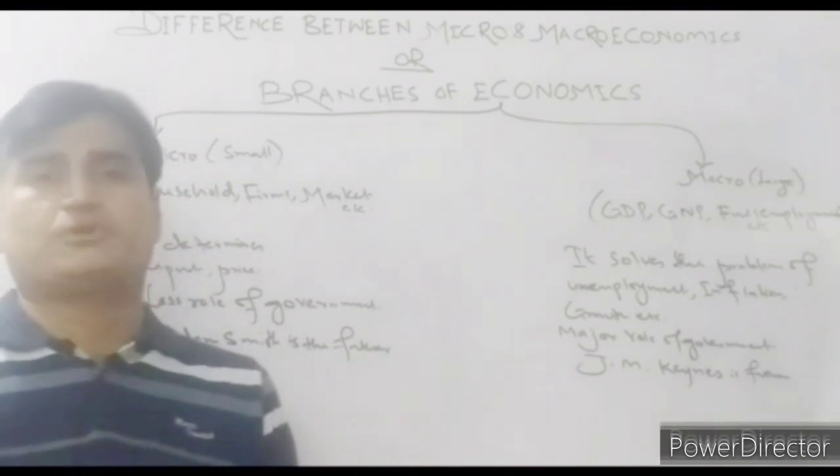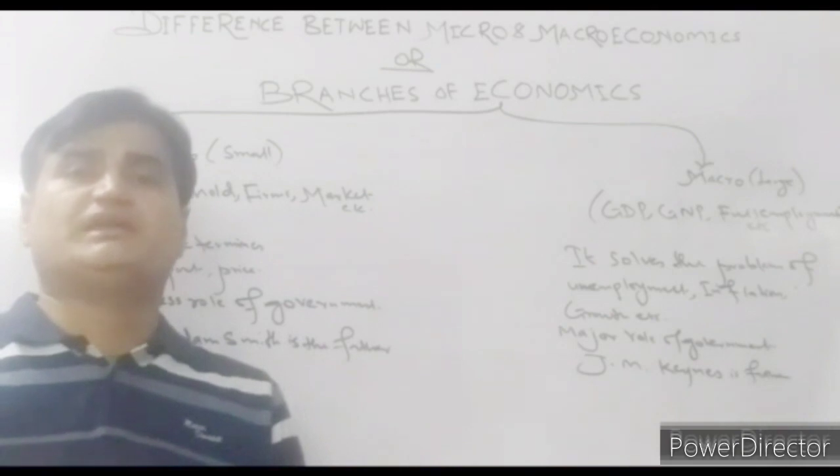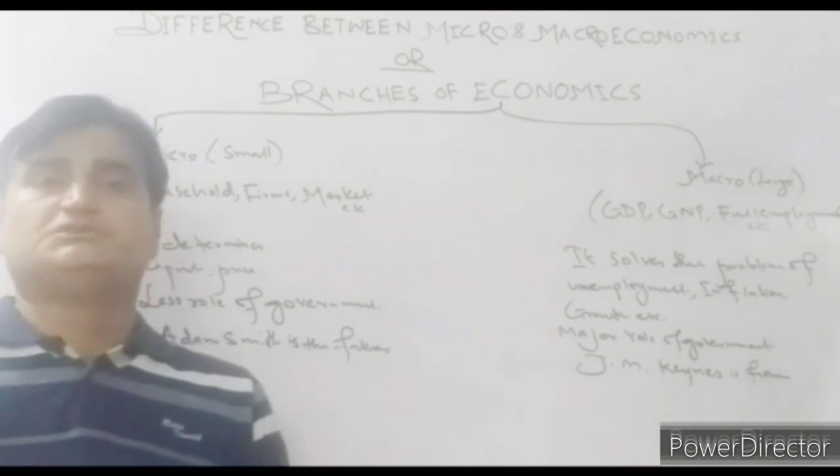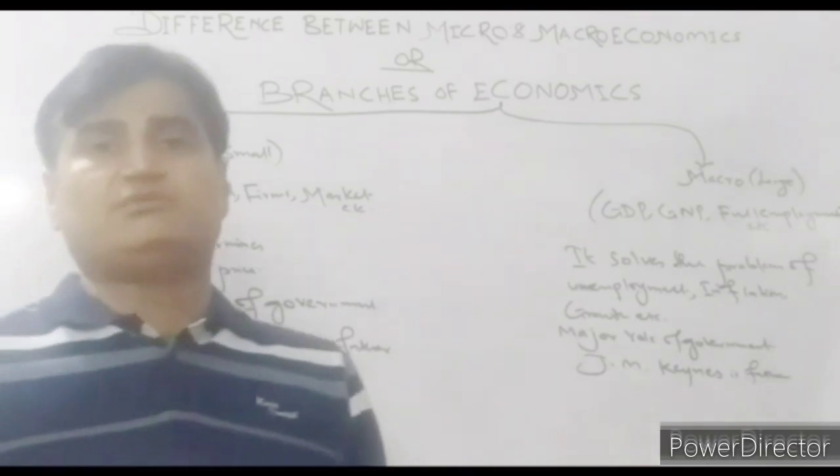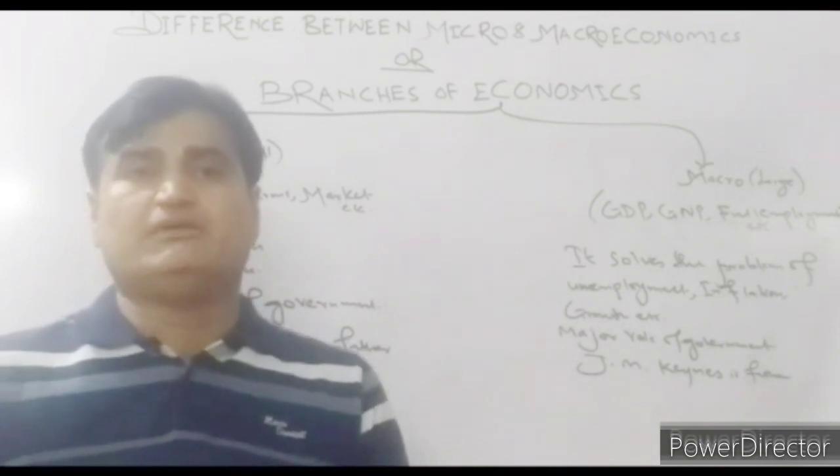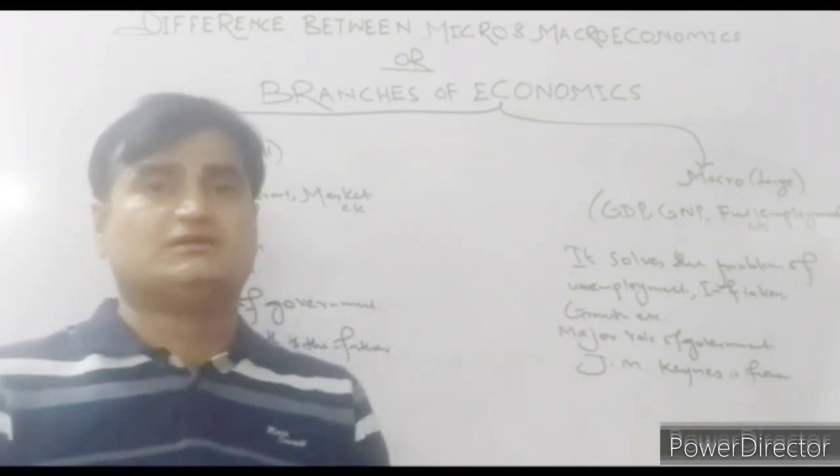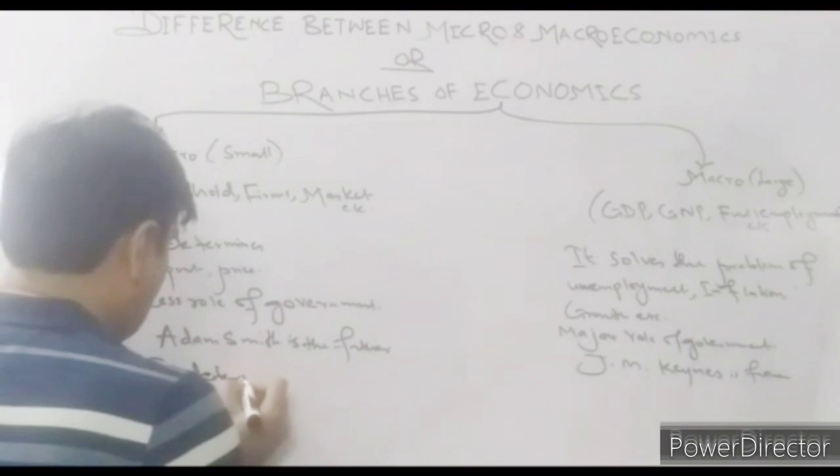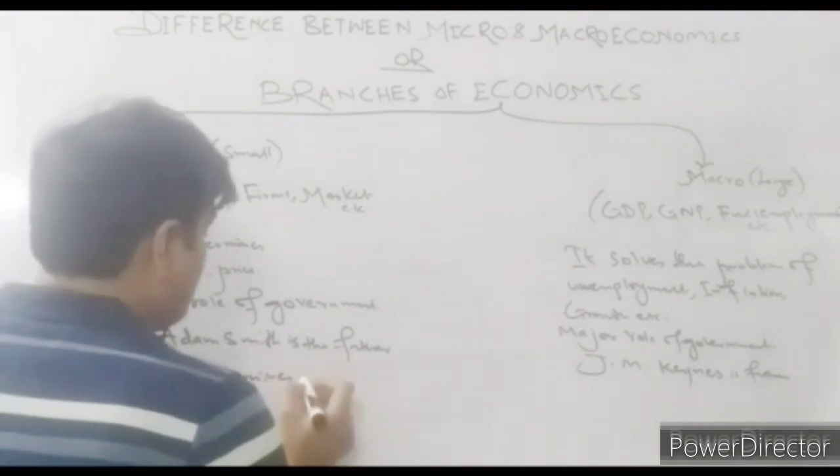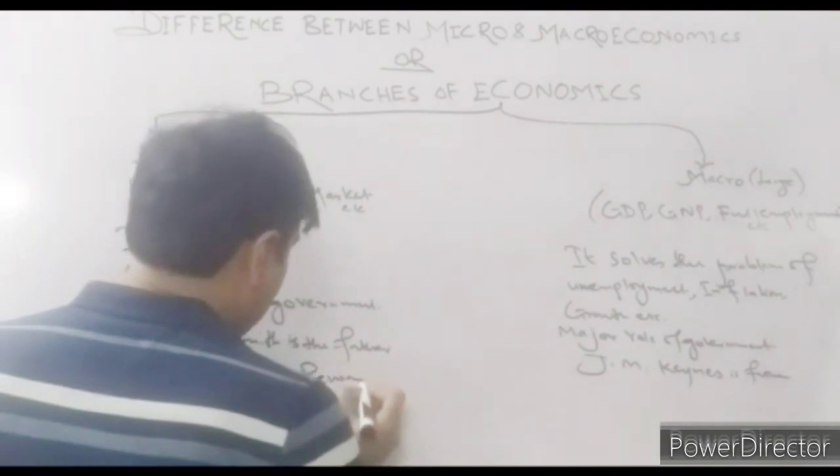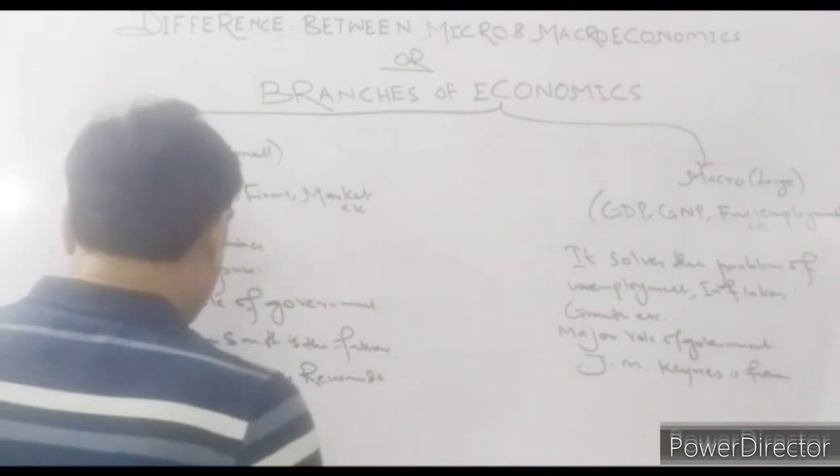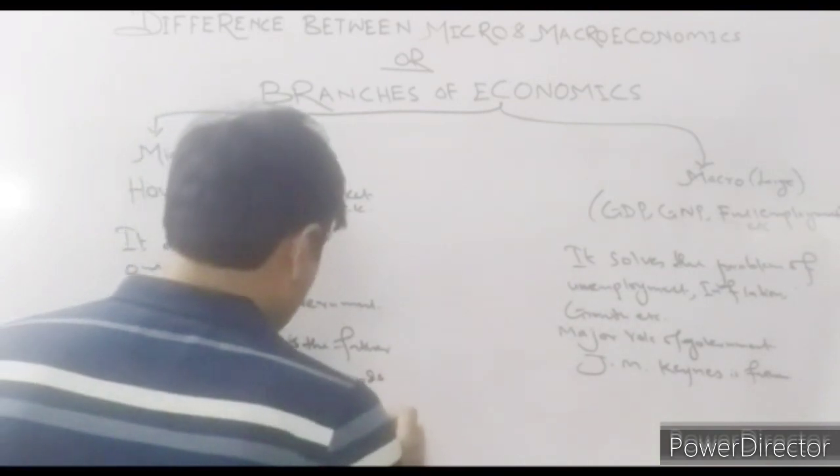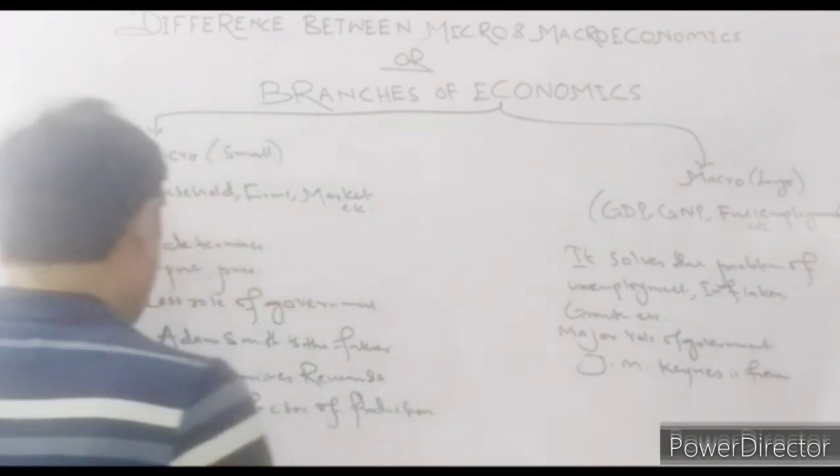Microeconomics decides what rent is to be allocated for the land on the basis of demand and supply forces, what the labor should be awarded in the form of wages, what would be the interest to be paid on borrowed capital, and what profit should go into the pockets of the entrepreneur. So microeconomics determines rewards for the factors of production in the form of rent.